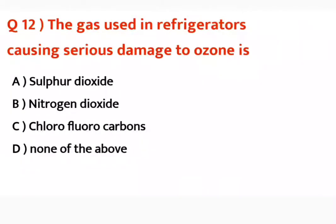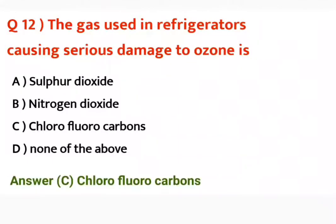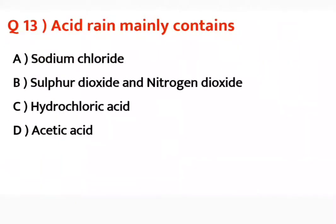Question number twelve: The gas used in refrigerators causing serious damage to ozone — refrigerators mein jo gas istemaal hoti hai, us se ozone ko bahut zyada khatrah rehta hai. Correct answer is chlorofluorocarbons (CFCs). Yeh ozone ko damage kerte hain.